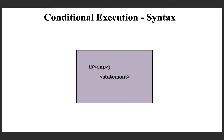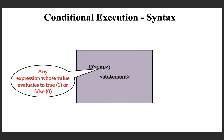Now look at the formal syntax. The keyword if is followed by a condition in parentheses. The angle brackets indicate this has to be replaced with any expression whose value evaluates to true (which is 1) or false (0). In C programming language there is no Boolean data type — false is represented by 0 and true is represented by 1. Following that you have a statement, which could be one statement or a number of statements within curly braces. This is the syntax of conditional execution using the if statement in C.